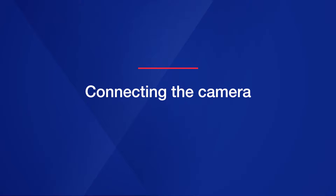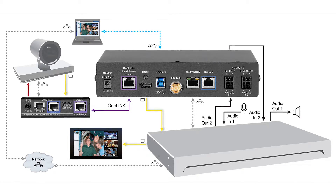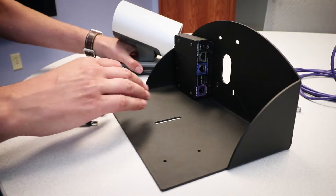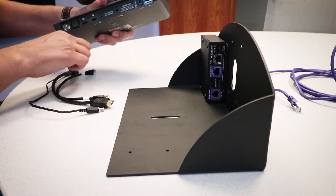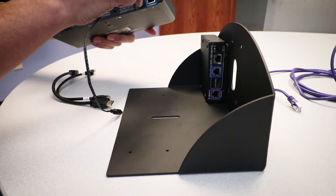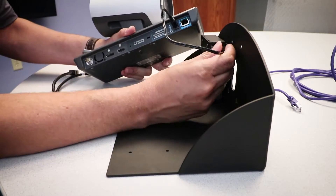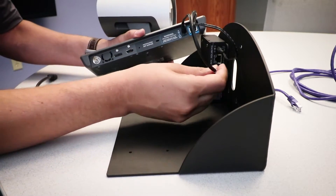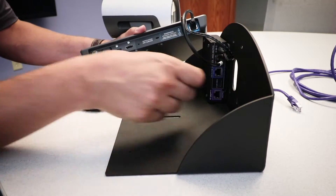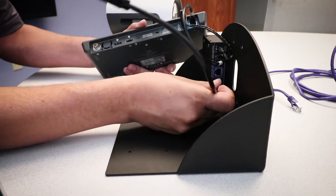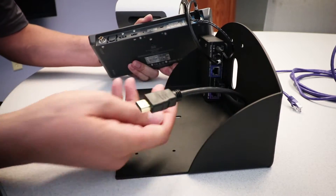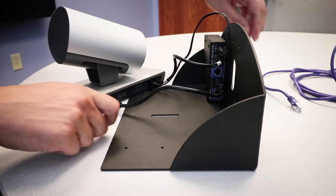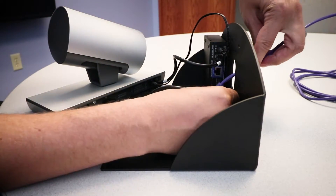Here is how it will all be connected when we are finished. I'll show you how it gets wired up. First on the camera end, we'll connect the camera to the EZ interface module with the supplied cables, connecting the power, network, HDMI for video, and connecting the category cable to our one link port.